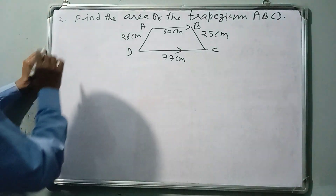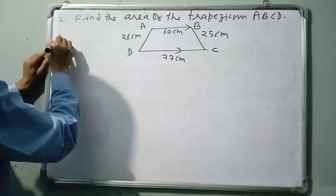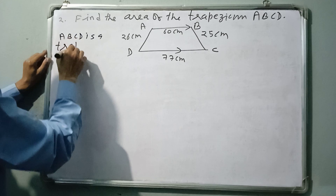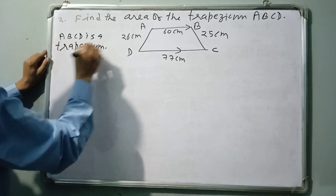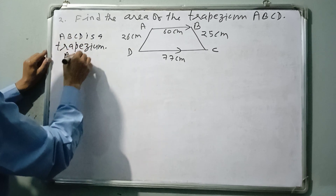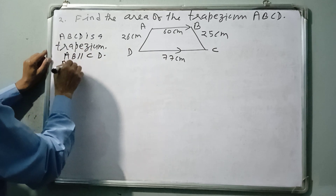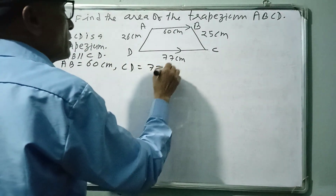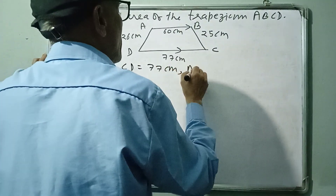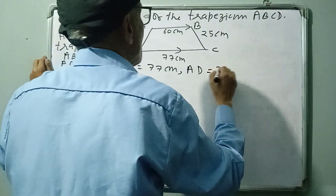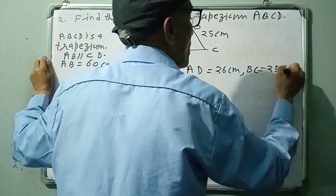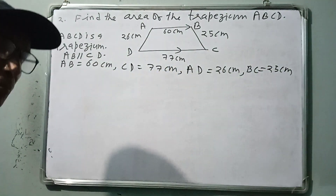ABCD is a trapezium in which AB is parallel to CD. AB = 60 cm, CD = 77 cm, AD = 26 cm, and BC = 25 cm. It is not straightforward to find the area directly, so we need to find the height first.